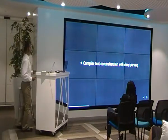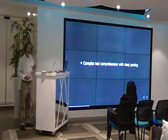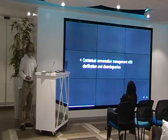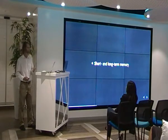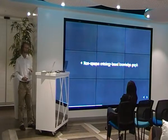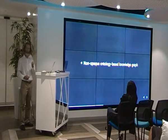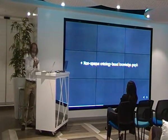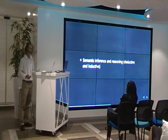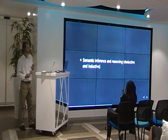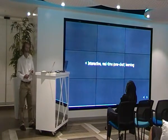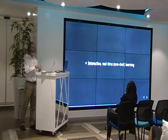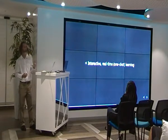The system can do complex text comprehension — you can really understand remarkably complex sentences. It manages a conversation; if it realizes it doesn't know something or what you're telling it is ambiguous, it asks for clarification. It has short-term and long-term memory, and an internal representation of what it knows that you can access and make sense of. So it's not like deep learning where it's all hidden and strange — you can see exactly what's happening inside it. It does inference, semantic inference — deductive and inductive reasoning. It learns interactively, including one-shot learning. Very different from deep learning where you need tens or hundreds of thousands of examples. Here you tell it something once and it knows it.